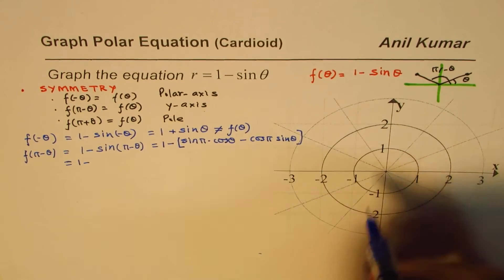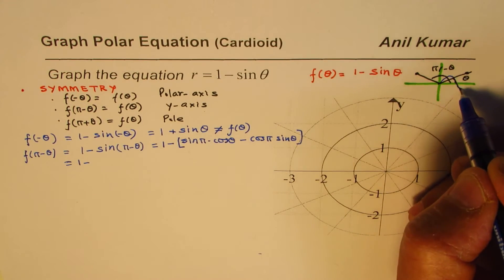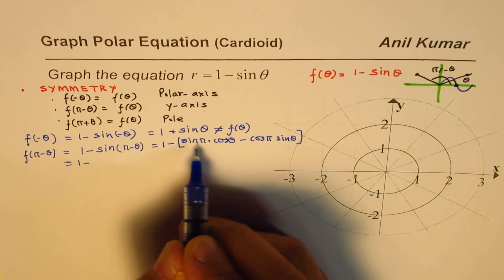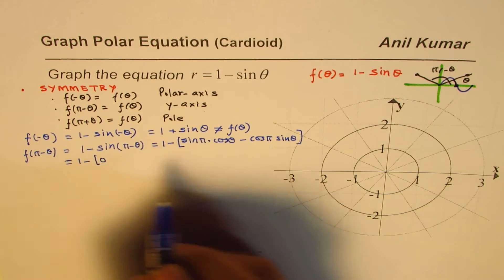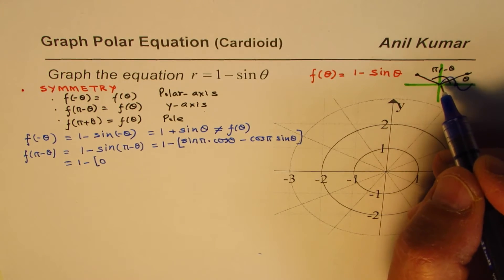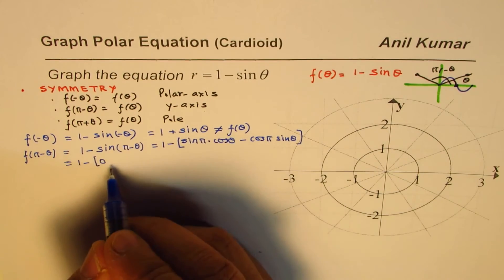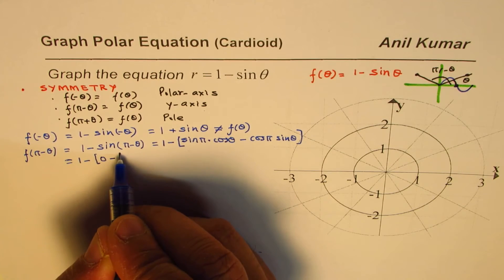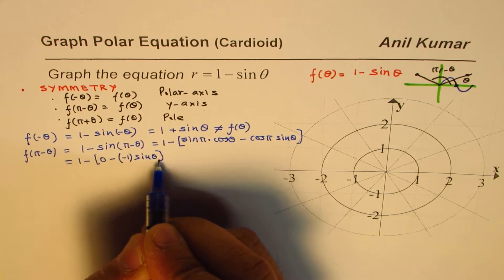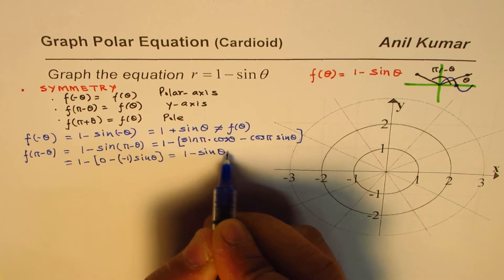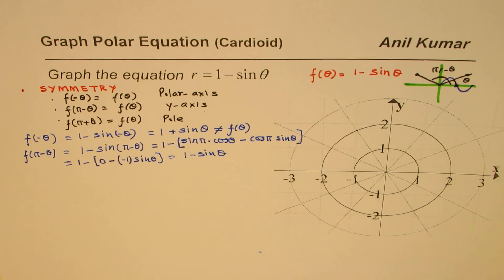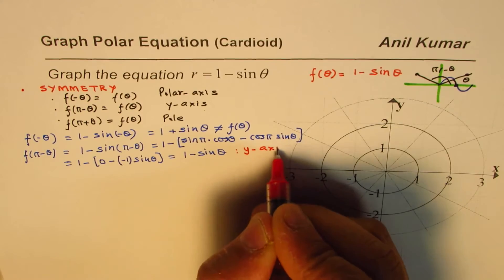So it's 1 minus, and what is sine π? Well, sine π is zero. So this term is zero. And what is cos π? Cos π is minus one. So we get minus of minus one times sine theta. That gives you 1 minus sine theta when you open this up. So that means our function is symmetric about y-axis.